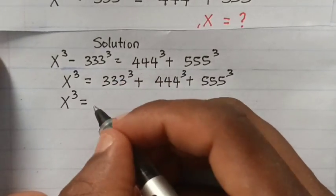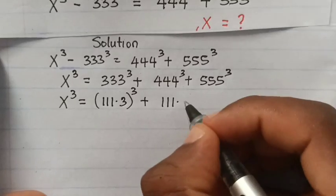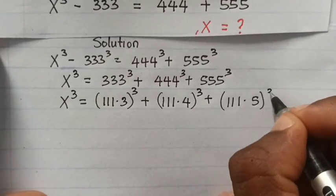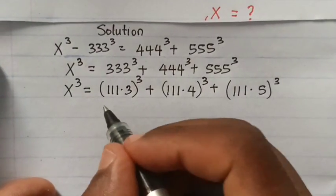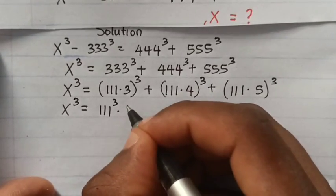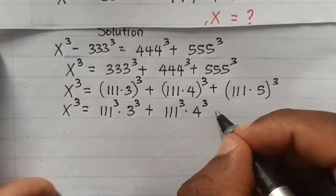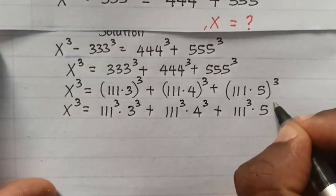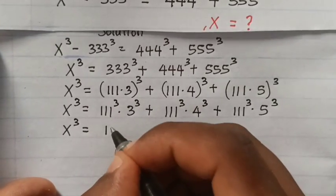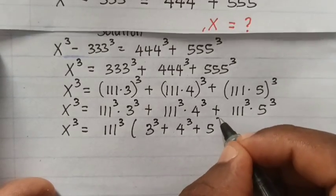x³ equals 111 times 3 cubed, plus 111 times 4 cubed, plus 111 times 5 cubed. Then x³ equals 111³ times 3³, plus 111³ times 4³, plus 111³ times 5³. So x³ equals 111³ times (3³ + 4³ + 5³).